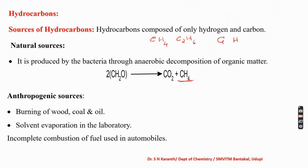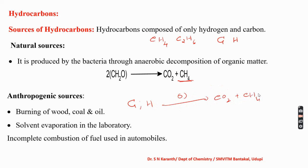Other than this, the burning of wood, coal, and oil also produces hydrocarbons. Wood mainly contains carbon and hydrogen, which on burning in the presence of oxygen produces carbon dioxide and some gaseous hydrocarbon components. Even in the laboratory, we use a lot of organic solvents; on evaporation, these hydrocarbon components move into the atmosphere. Solvent evaporation in the laboratory is a main source of hydrocarbons.